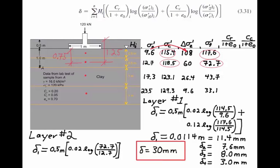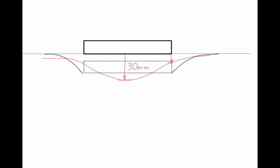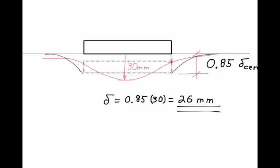We have one final calculation to do. The 30 mm settlement was calculated under the center of the footing. The settlement under the edge would be smaller because the change in vertical stress would be less, giving a bowl-shaped settlement curve for a perfectly flexible footing. However, in this case we have a rigid footing, and the settlement of a rigid footing must be uniform across its whole width. Based on experience, the settlement of a rigid footing is approximately 85% of the theoretical amount calculated at the center. So our final settlement is 0.85 times 30 millimeters, which equals 26 millimeters. That is the settlement of this rigid footing on this clay layer using the ELogP method.